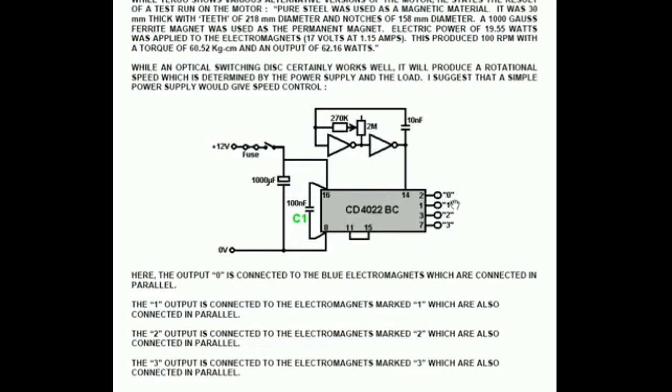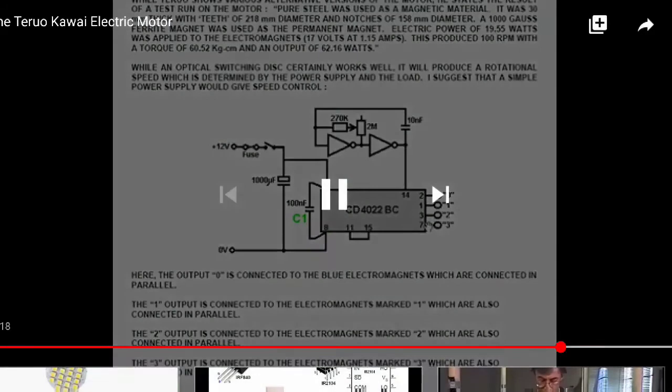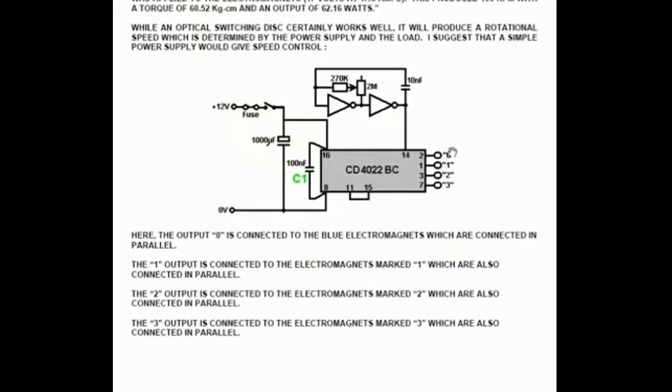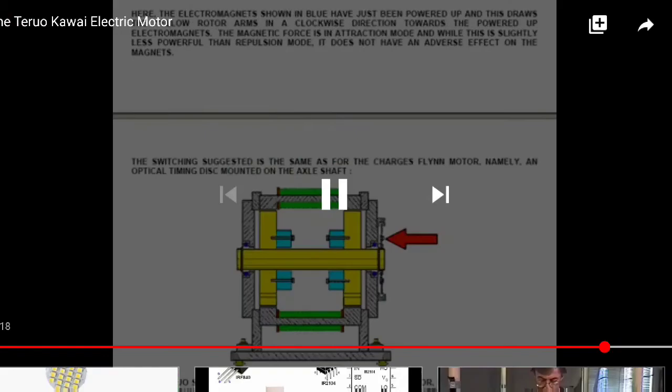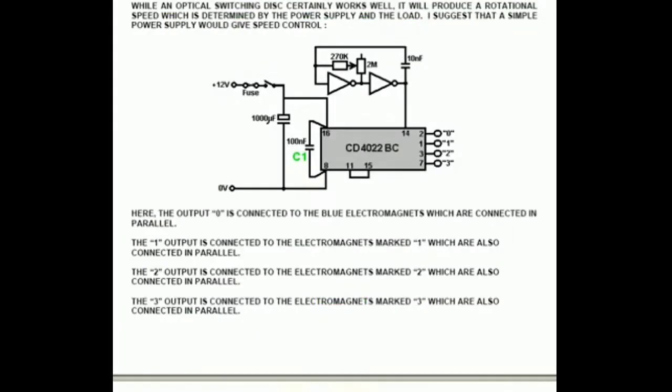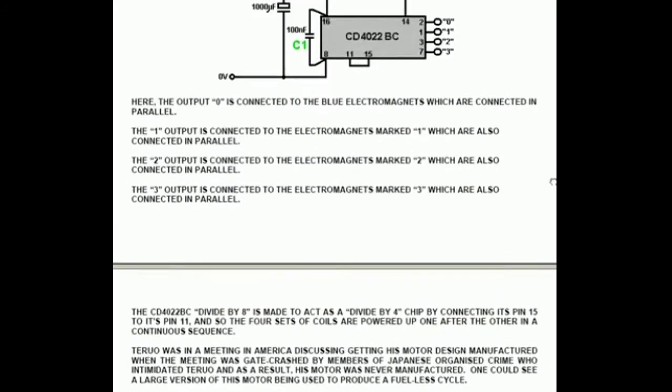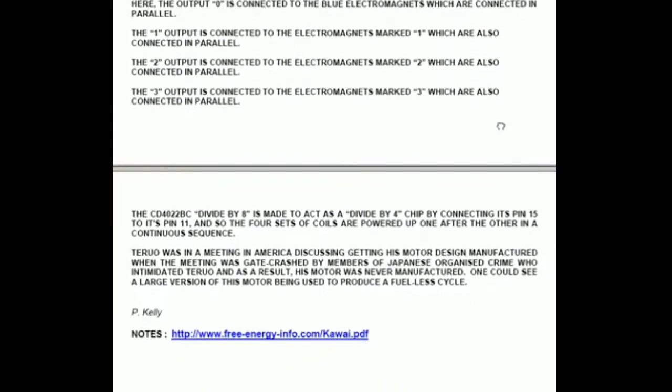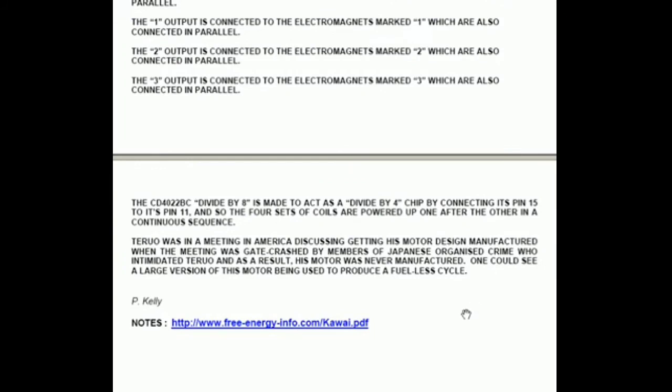That is an effective way of getting the sequence that you want. The output 0 is connected to the blue electromagnets in the previous full voltage across each of them. The 1 outputs are connected to the electromagnets marked 1 again in this diagram above. The 1s are the electromagnets which immediately follow. CD 4022 BC divided by 8 is made to act as a divide by 4 by connecting its pin 15 to its pin 11 and so the 4 sets of cords are powered up one after the other in a continuous sequence.